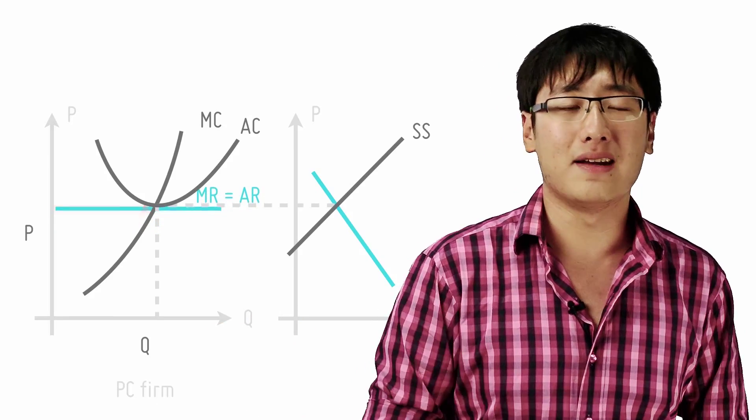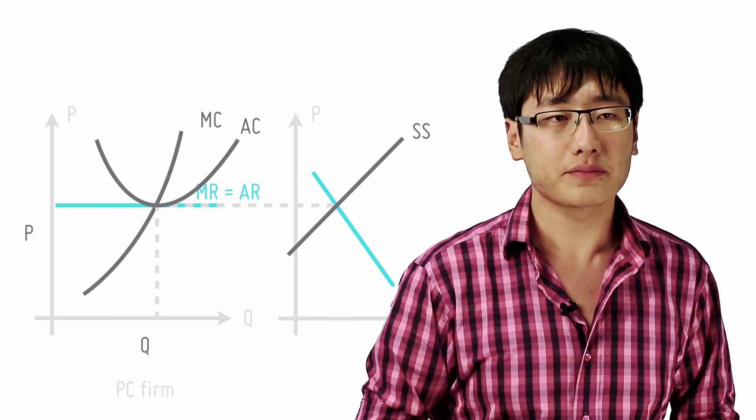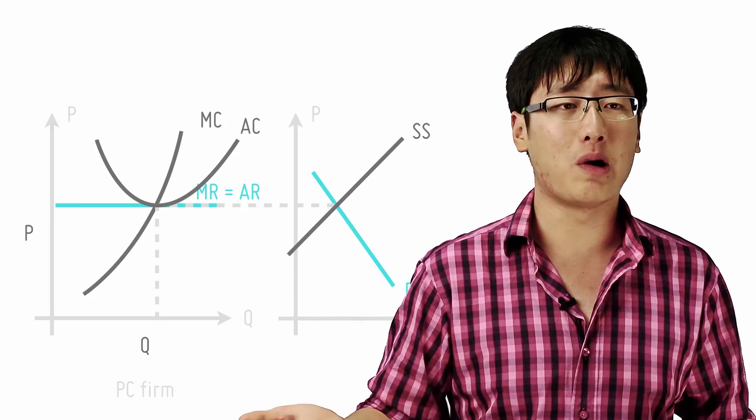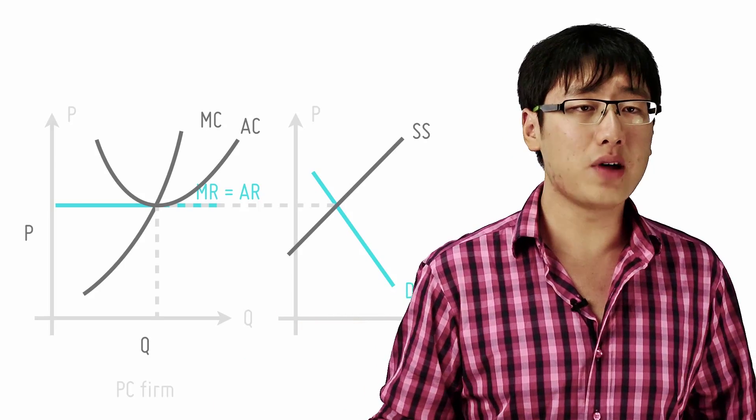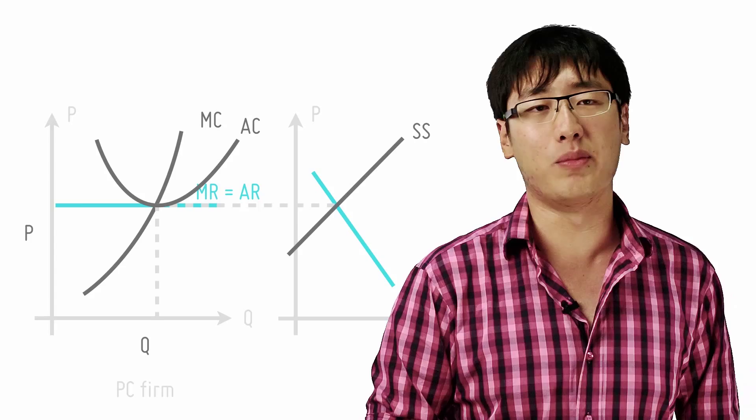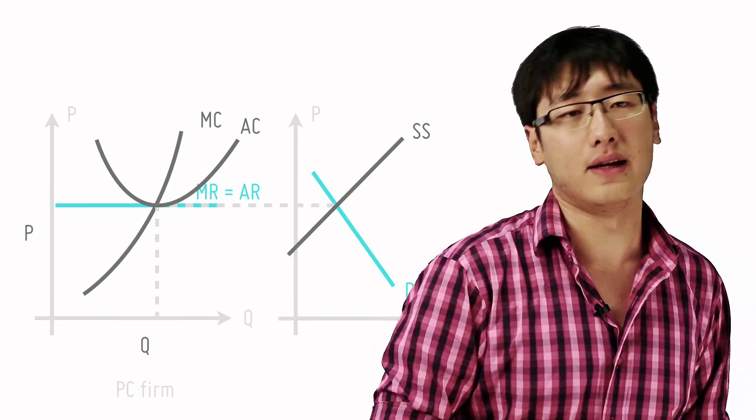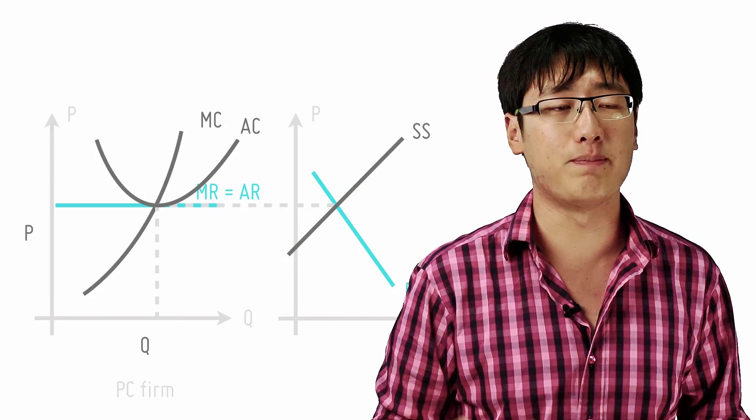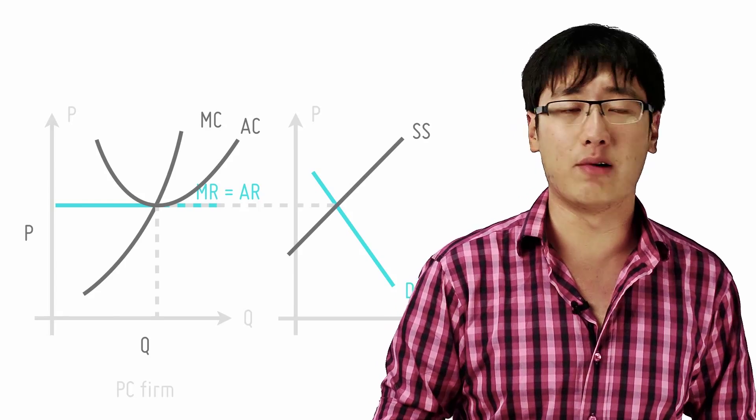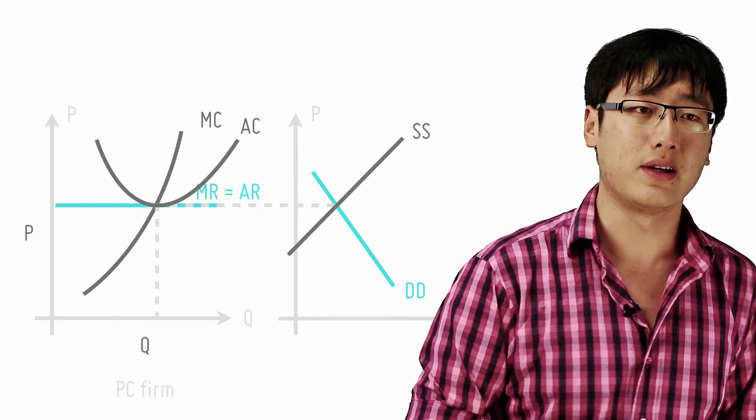These firms exit and the supply curve shifts to the left. At every price, lower quantity is supplied. When does this stop? Again, when profits become normal again for a typical firm in the industry and that happens when P goes to AC and here we arrive at our new industry equilibrium.